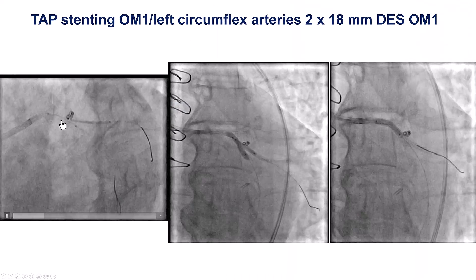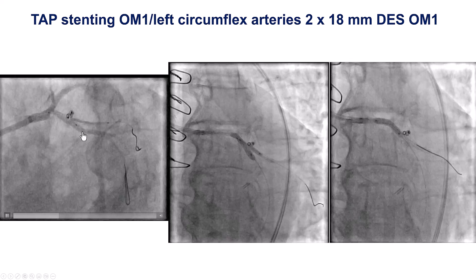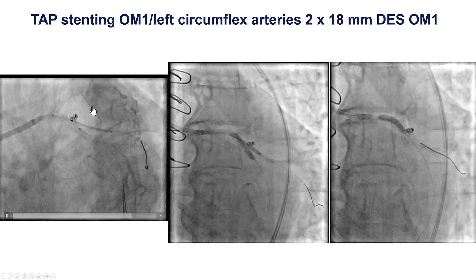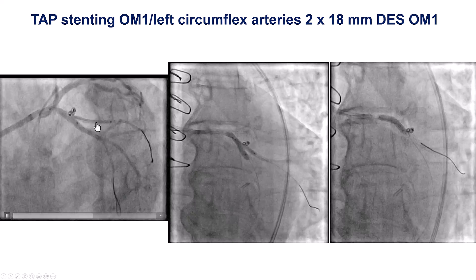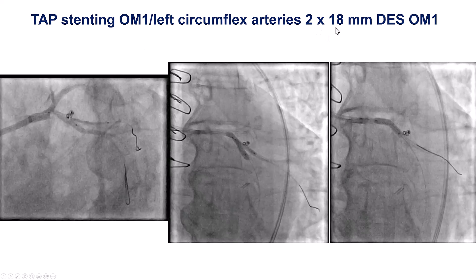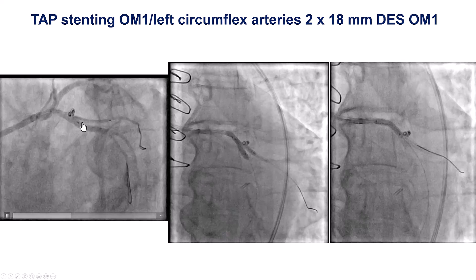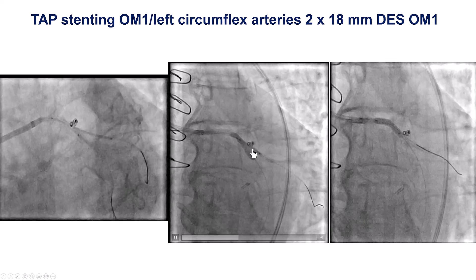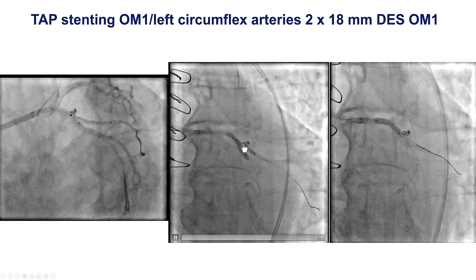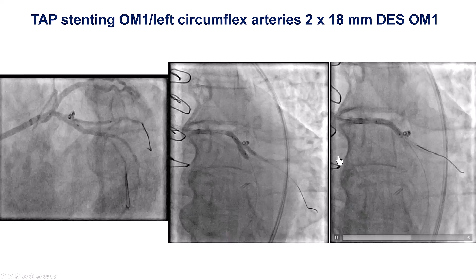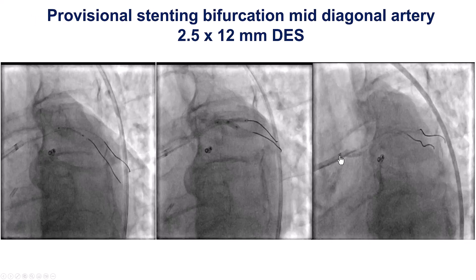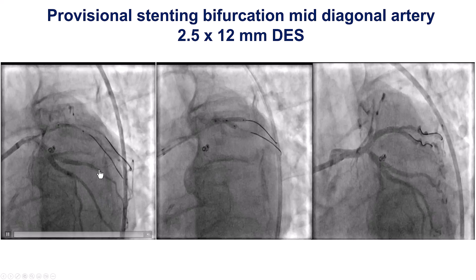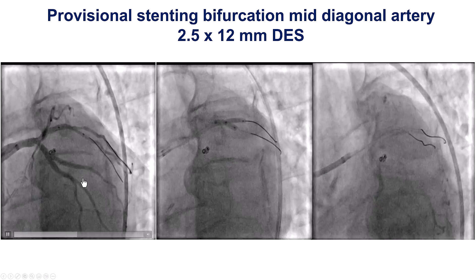This required salvage from provisional stenting. We decided to use TAP, even though the angulation was not perfect. We placed a 2x18mm stent into the obtuse marginal branch, coming back slightly into the circumflex, deployed it, then pulled the balloon back and performed kissing balloon inflation. This provided a nice result with good flow into the obtuse marginal as well as the circumflex.